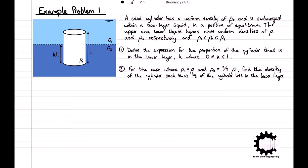Firstly, derive the expression for the proportion of the cylinder that's in the lower layer, denoted k, where k is greater than or equal to 0 and less than or equal to 1. Then for the case where rho_1 equals rho and rho_2 equals 3/2 rho, find the density of the cylinder rho_0 in terms of rho such that two-thirds of the cylinder lies in the lower layer.